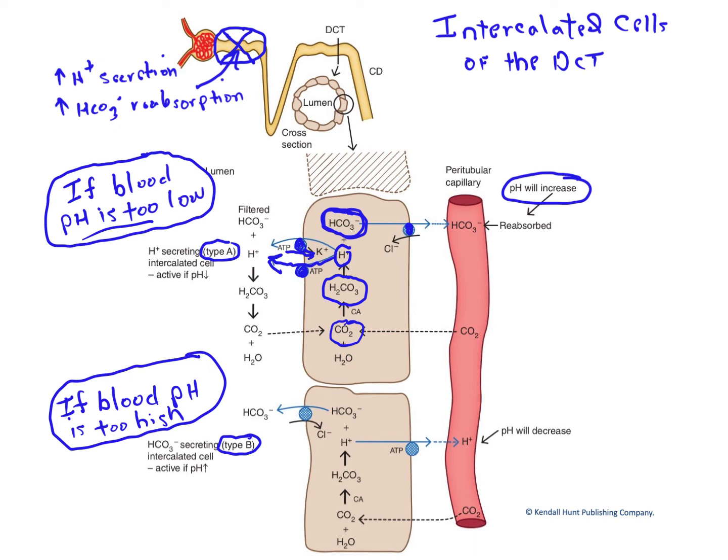Also, it would be disingenuous for the type A cells to continue their activity, secreting protons and reabsorbing bicarbonate. That would also make the situation worse. What we now do is we activate the type B intercalated cells.